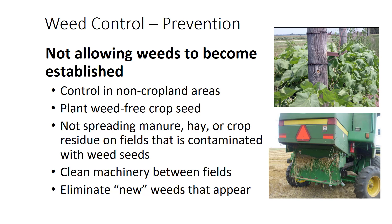The following are several preventative cultural practices that do not allow weeds to become established and spread: control weeds in non-cropland areas including fence rows, drainage ditch banks, and right-of-ways; plant only high-quality, weed-free crop seed; do not spread manure, hay, or crop residues contaminated with weed seed on cropland; clean farm machinery between fields to avoid transport of weed seed, rhizomes, tubers, and rootstocks; and if new or unfamiliar weeds appear, have them identified quickly and take appropriate control measures if necessary.